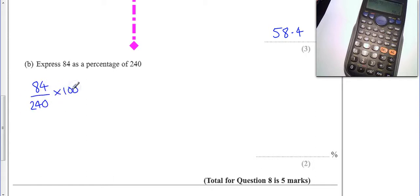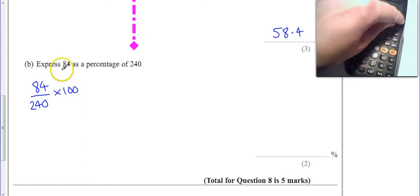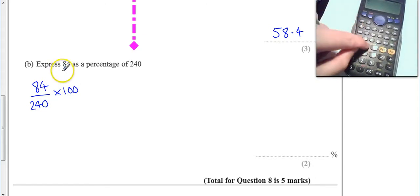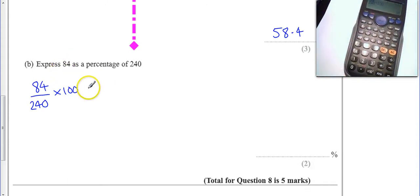So it's times by 100, so you can do it a couple ways. And that gives me just 35, so we know that's 35% straight up.